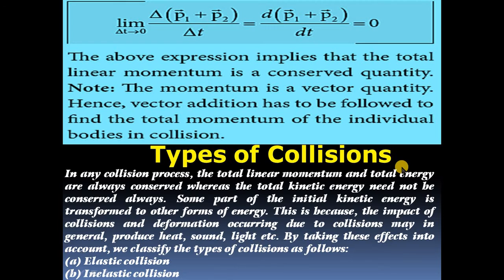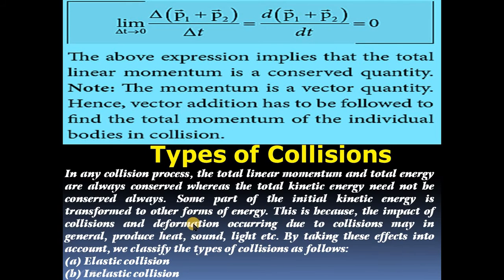The next topic is types of collisions. In any collision process, the total linear momentum and total energy are always conserved, whereas the total kinetic energy need not always be conserved. Some part of the initial kinetic energy is transformed to another form of energy, because the impact and deformation occurring during collision can produce heat, sound, light, etc.